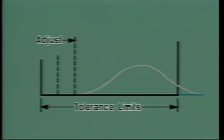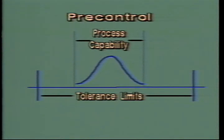Knowing where the process is centered, how wide it is, and the direction in which it is moving can enable you to work smarter, not harder. The second method of statistical process control is called pre-control.